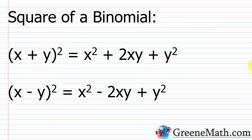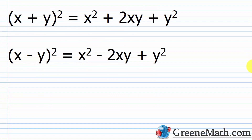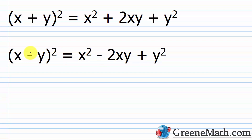For the next formula, we're going to look at the square of a binomial — two scenarios. The quantity x plus y squared equals x² plus 2xy plus y². And x minus y squared equals x² minus 2xy plus y². The difference between the two formulas is just the sign in the middle — a minus gives a minus in front of the middle term.